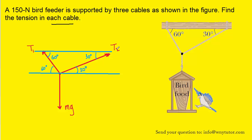The angles are important because we need to break our forces into their x and y components. T1 and T2 will need to be broken into their x and y components because those forces are acting at angles. Mg only has a y component — it's pointing straight down, not to the left or to the right, so there is no x component for mg. To organize the components of the forces, it's useful to use a table.